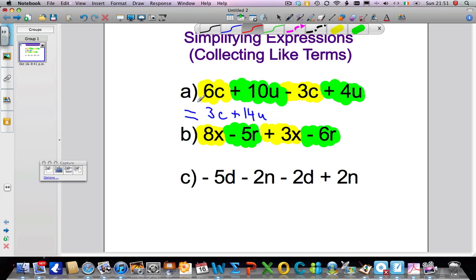So it's time to go on a bit of red. 8x + 3x gives me a total of 11x. And -5r - 6r gives me a total of -11r. So basically it's -5r - another 6r gives me -11r in total.